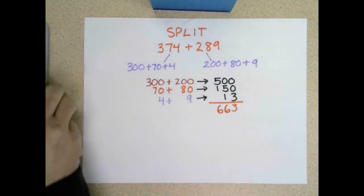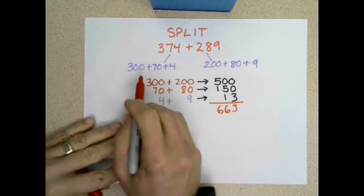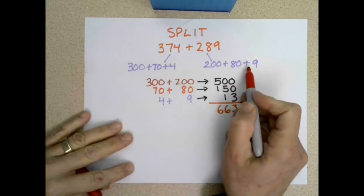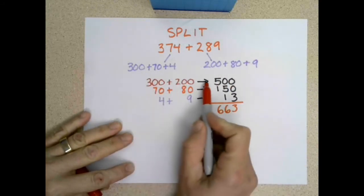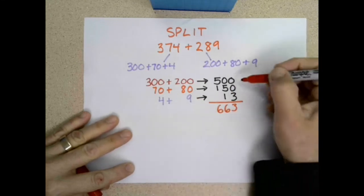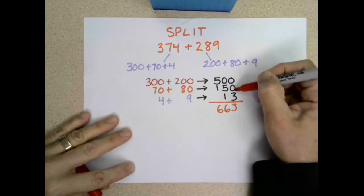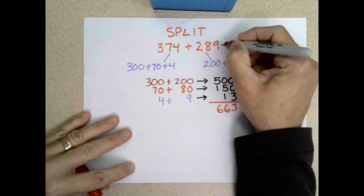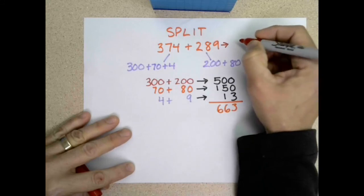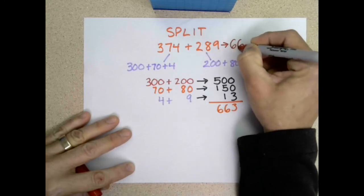So I can find my final answer by splitting my numbers apart in expanded form, adding hundreds, tens, and ones, and then combining the hundreds with the tens and with the ones. So 374 plus 289 is 663.